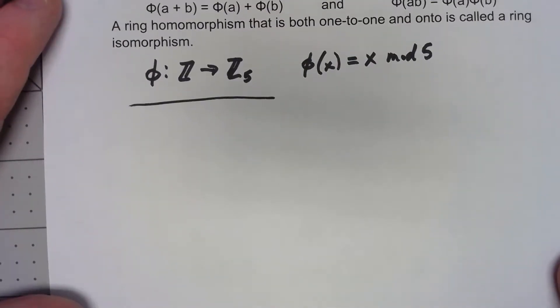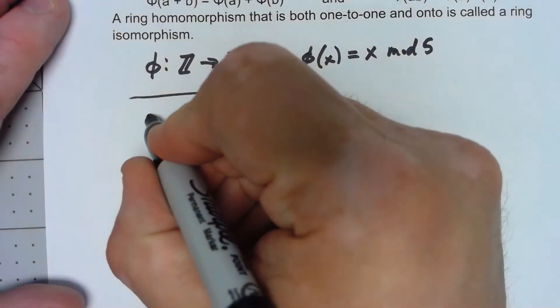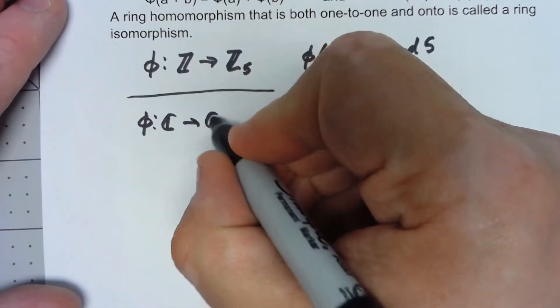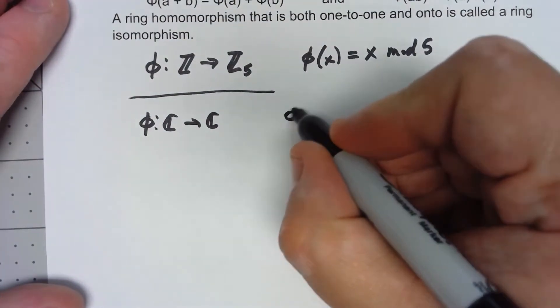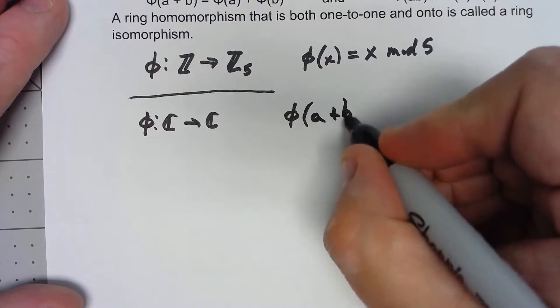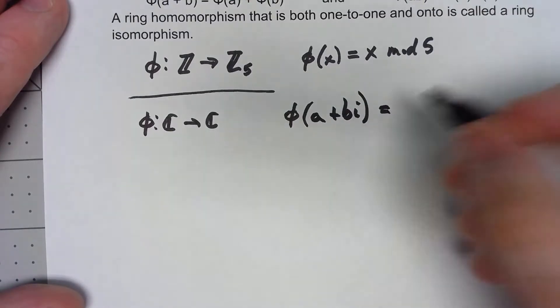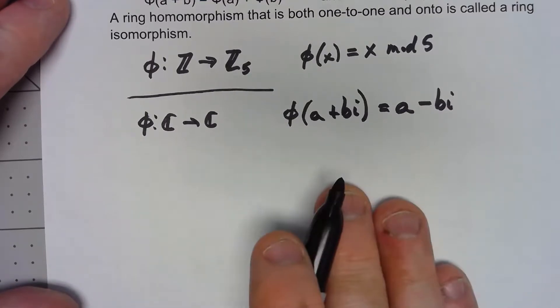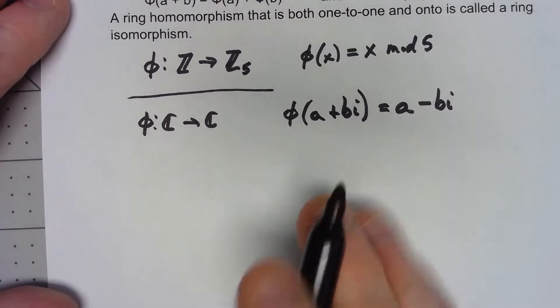Let's try another one that's a little bit more interesting. Let's say φ maps the complex numbers to the complex numbers. So a complex number has to have the form a + bi and what I'm going to do is I'm going to take it to its complex conjugate a - bi. It's pretty easy to see that this preserves addition.